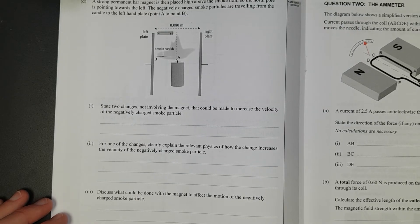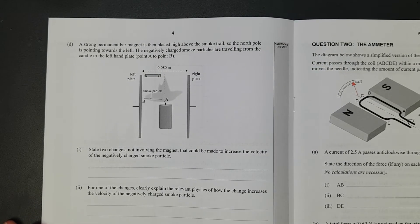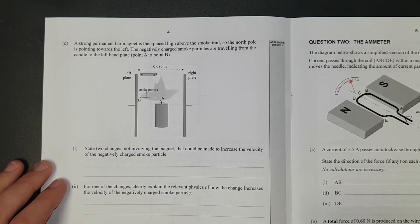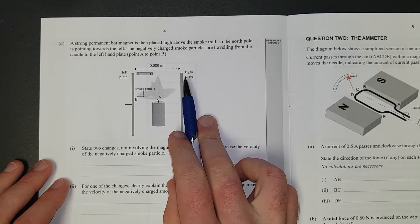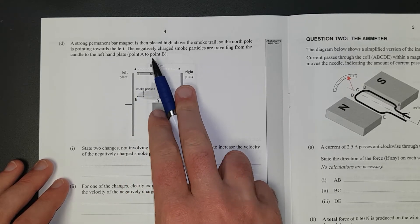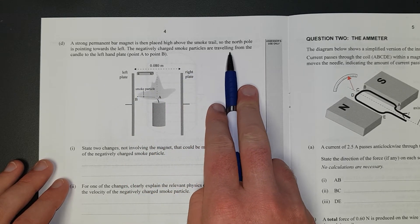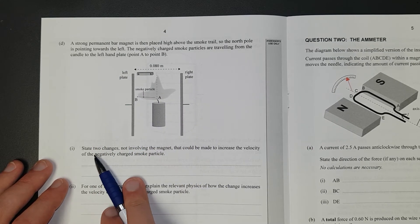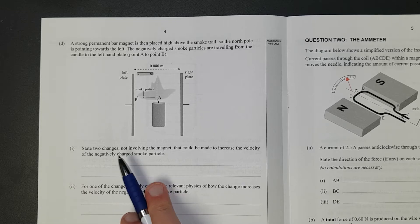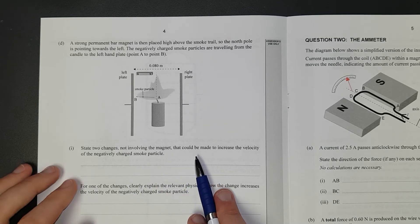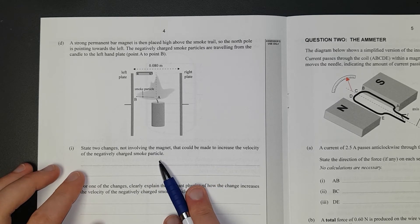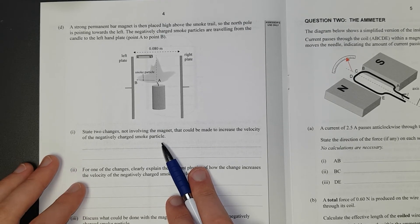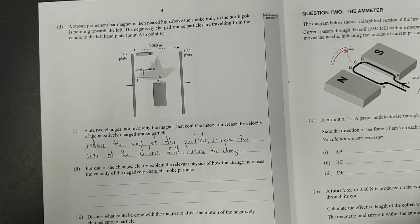Right. A strong permanent bar magnet is then placed, oh, can we see that? No, we can't. Is then placed high above the smoke trails, it's about there. So, the North Pole and South Pole are aligned with the electric field. The negatively charged smoke particles travelling from the candle, they're going from here to here. Right. State two changes not involving the magnet that could be made to increase the velocity of the negatively charged smoke particle. I'll pause it, write the answer, and then discuss.